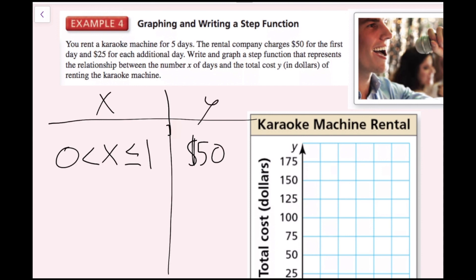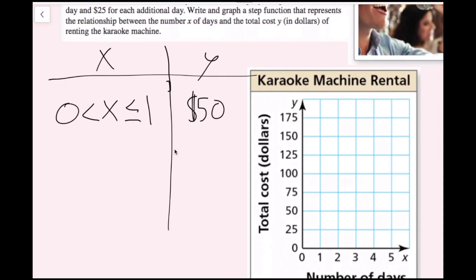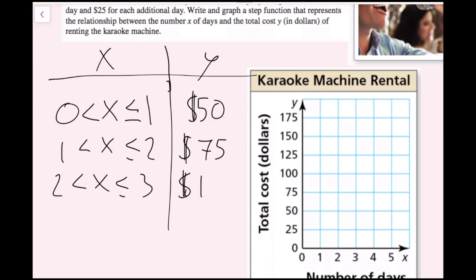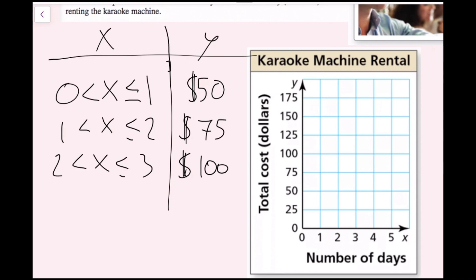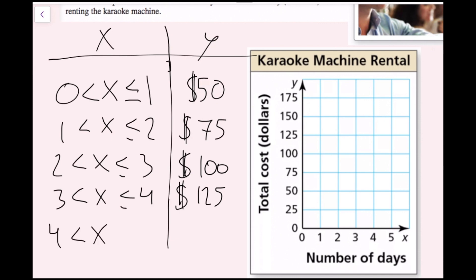Once past one day, it costs an extra $25, so for 1 less than x less than or equal to 2, the cost is $75. Following the pattern: for 2 less than x less than or equal to 3, it's $100; for 3 less than x less than or equal to 4, it's $125; and for 4 less than x less than or equal to 5, it's $150.